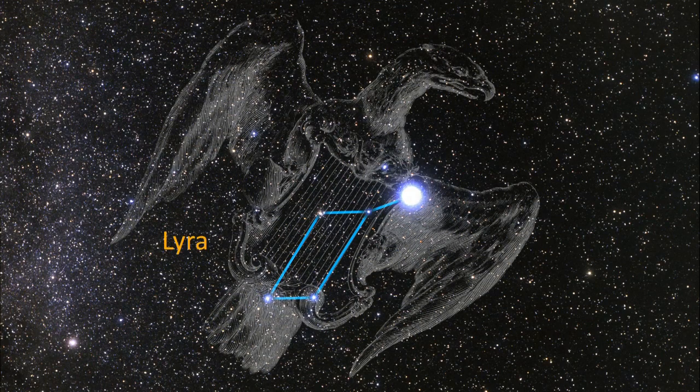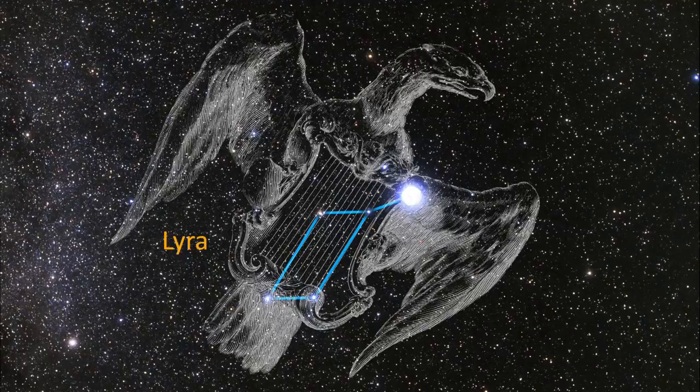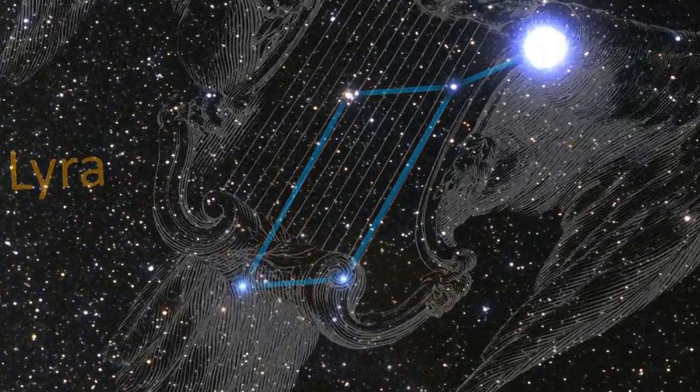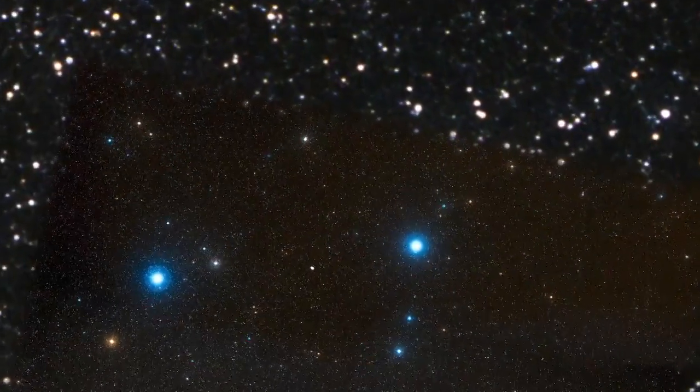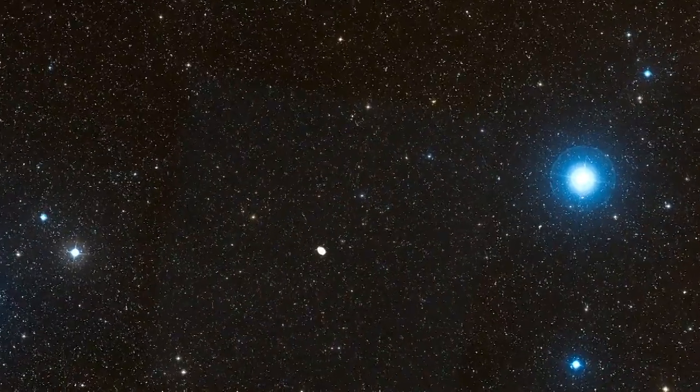The iconic Ring Nebula lies in the summer constellation Lyra. This glowing ring of gas is the result of the death of a sun-like star.